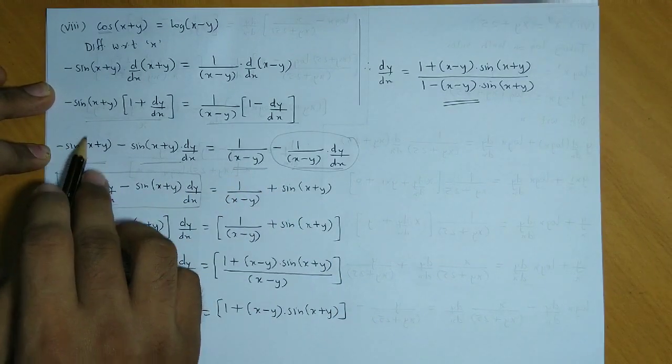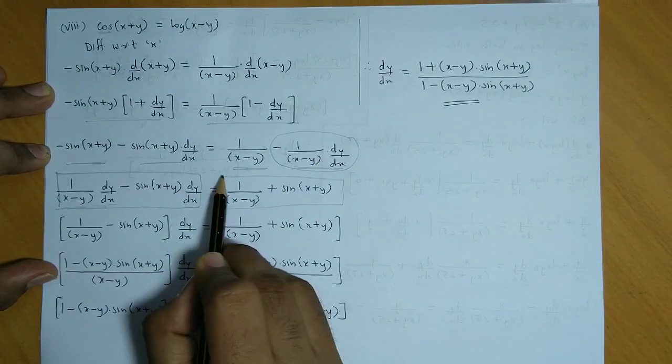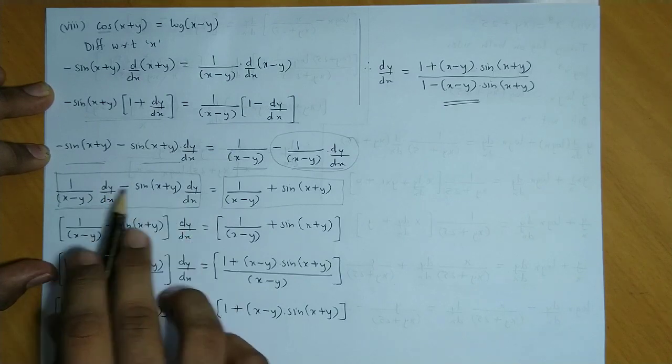Now taking dy by dx common. So these two terms remain in the bracket, and this is as it is.